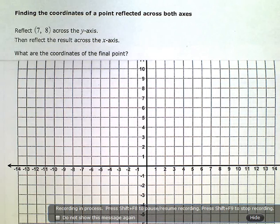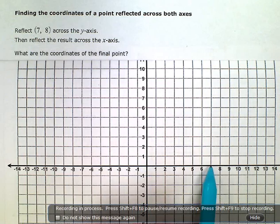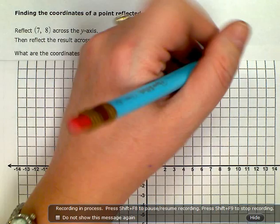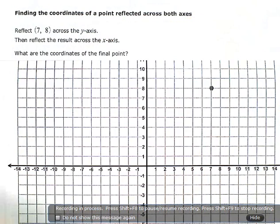First thing I'm going to do is plot this point. So over 7, up 8, will put me right there. That's where I'm going to start, the point (7, 8).